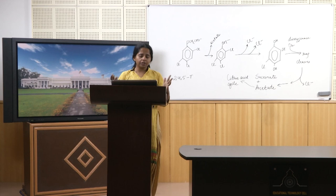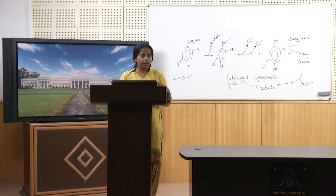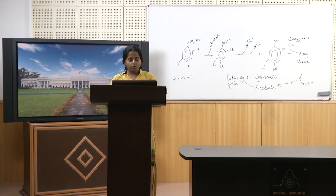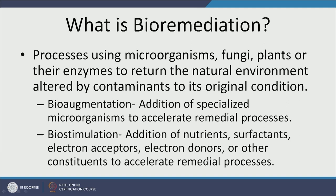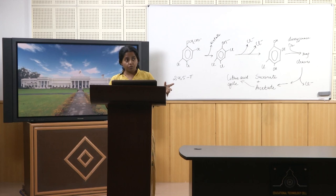In biostimulation, we create conditions suitable for microbes to remediate the problem. If we want more sulfate reduction to happen, we add biomass or nutrients so that sulfate-reducing microbes can be enriched. In biostimulation, we don't add microbes — we add electron donors, nutrients, surfactants, electron acceptors, or any other chemical that will help accelerate the remediation process. The chief difference is: in bioaugmentation we add microbes, augmenting the existing community; in biostimulation we stimulate the existing community. Either way, we are trying to get rid of the contaminant.